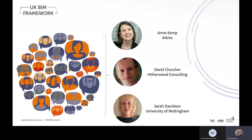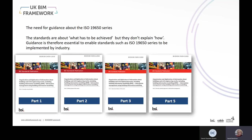We also work closely with CDBB who lead on the presentation of the guidance. The ISO 19650 series currently comprises Parts 1, 2, 3 and 5. Part 1 covers the overall concepts of information management using BIM. Part 2 is specific to the delivery phase — design and construction of assets. Part 3 covers the operational phase. Part 5 sets the requirements for the adoption of a security-minded approach to information management as a whole.